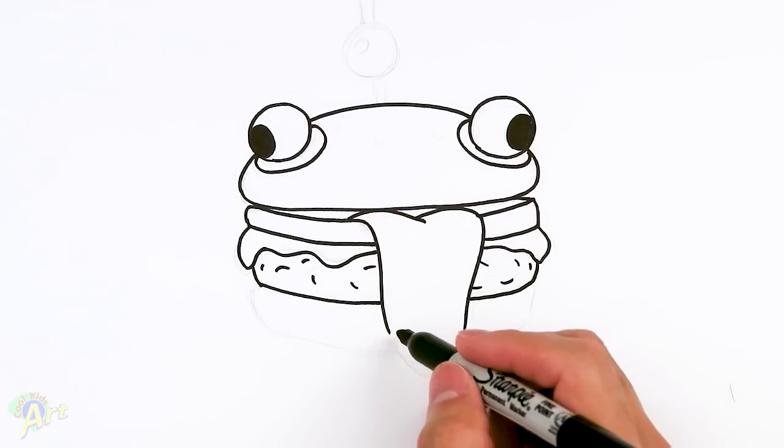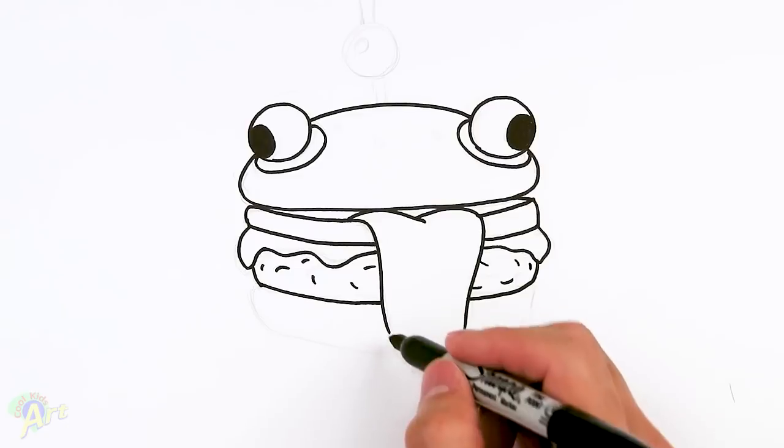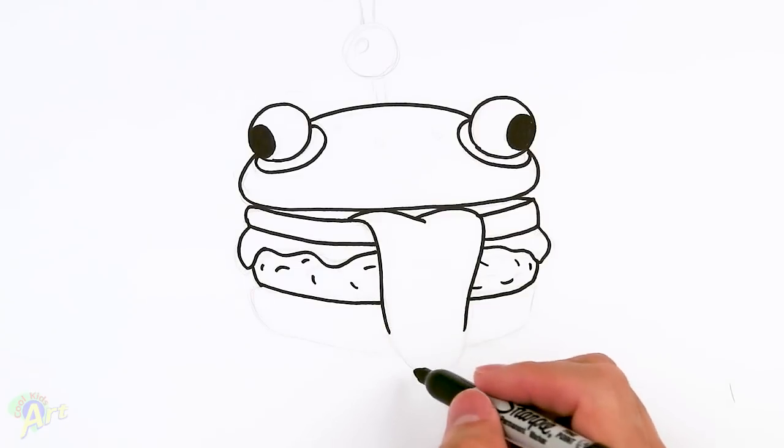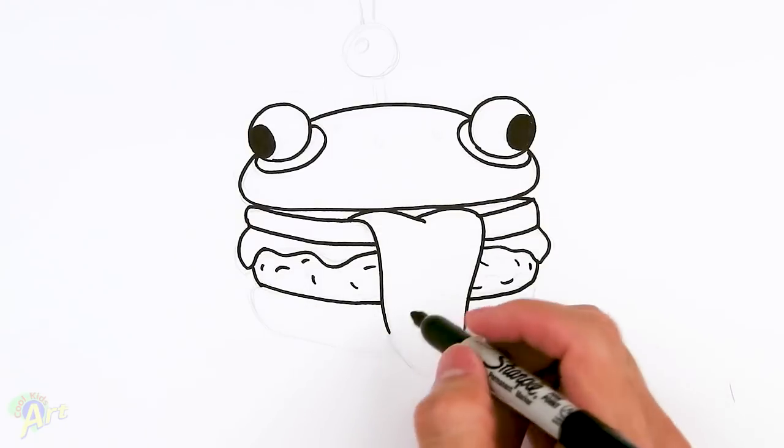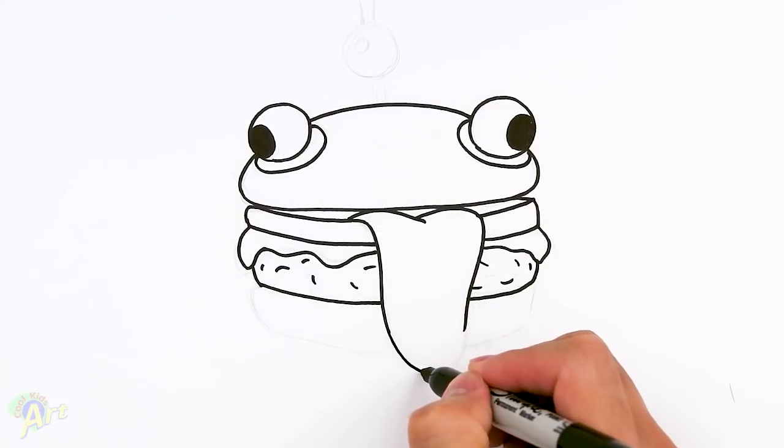Okay, and then now we can finish up the tongue. So, because the reason why we didn't do this earlier was because, you know, if you make the tongue too long, then it would look kind of funny, right? So now we know it's not gonna be too long, so we're just gonna close it off.